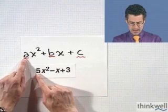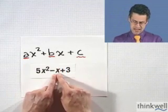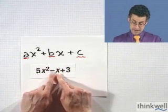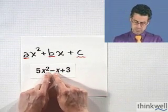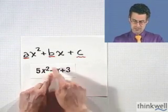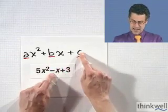Here I see a is 5. Looks like there's nothing in front of the x, so you might guess 1, but that's wrong because of that minus sign. So I have to interpret the minus sign as plus negative 1. And so in fact, b is negative 1 and c is 3.